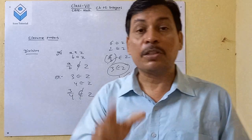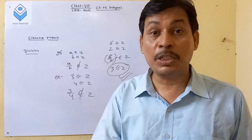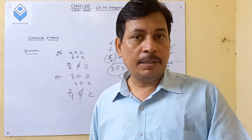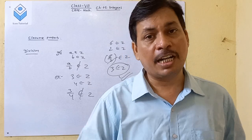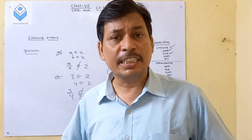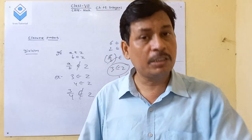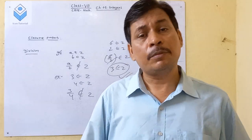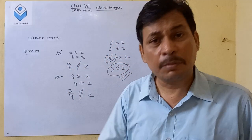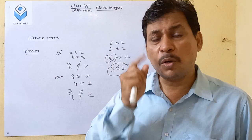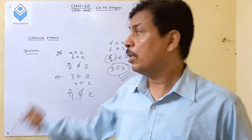For the closure property to be satisfied, all integers must satisfy it — not just a few numbers. Since there exist integers where division does not produce an integer result, once any number is not satisfied, that property does not hold for integers.